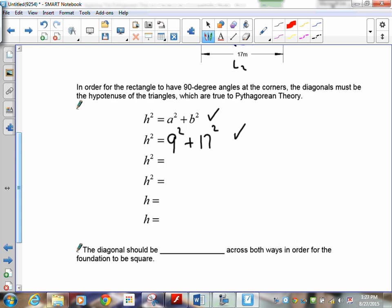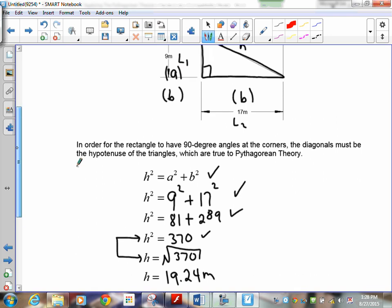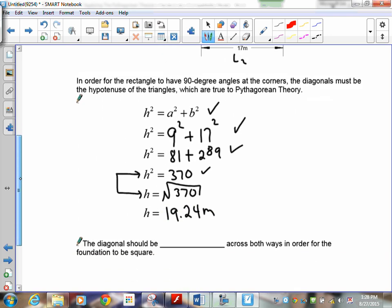Now, do you know the answer to 9 squared? That's 81. And this one is 289. If you can square it correctly, good. Now, can you add? Good. Now, this is where the change is. Since this is h squared, we've got to get down to an h. How do you do that? Well, you find the square root of 370. Now, 370 square root is 19.24. And we are working in meters. So if his floor is correct, and it's going to be a perfect rectangle, that means that h must be 19.24. So the diagonal should be 19.24 meters across both ways in order for the foundation to be square.